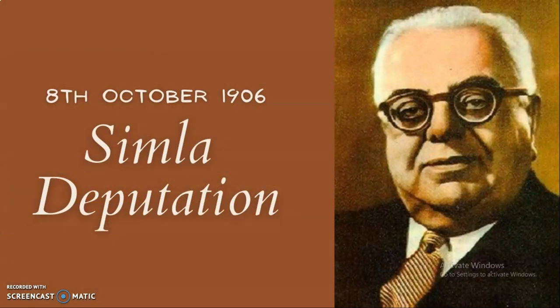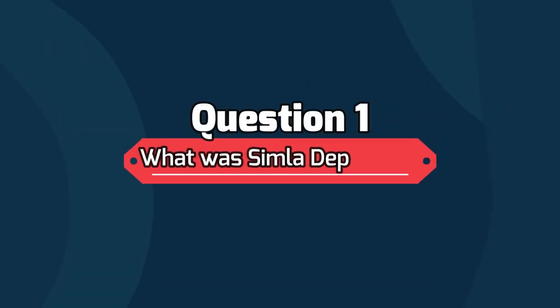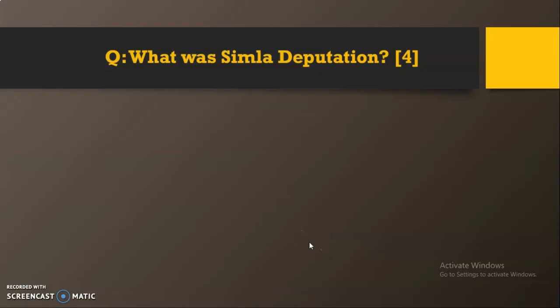The new topic is the Shimla Deputation 1906. Before we start, let's see what content we are going to cover in this video. The very first content is 'What was the Shimla Deputation?' — a four-mark question. Usually two questions come from this topic: one is a four-mark question and another is a seven-mark question, which we will see in an upcoming slide.